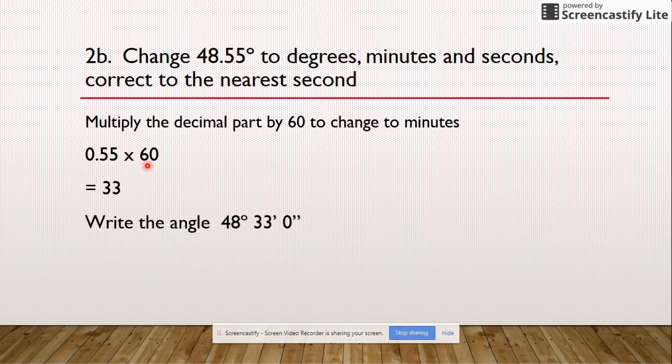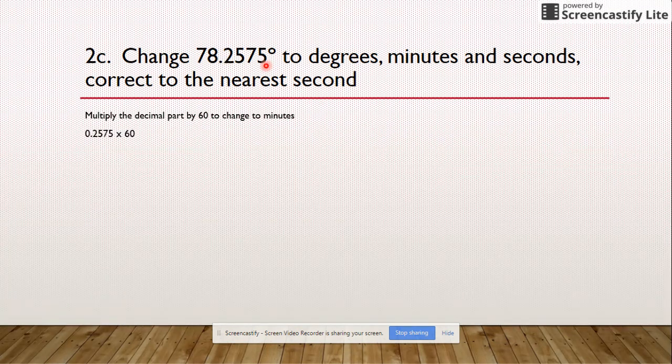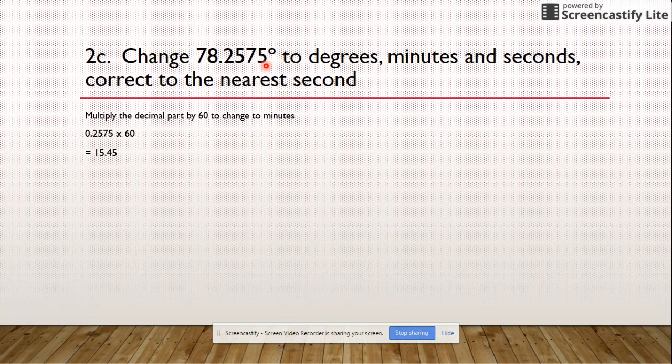Up to 2c: 78.2575. Multiply your decimal, so 0.2575 by 60, and you get 15.45. Excellent. So that means that our second part of our number is going to be 15 minutes. There we go: 78 degrees, 15 minutes.